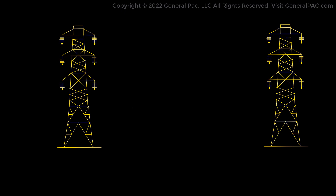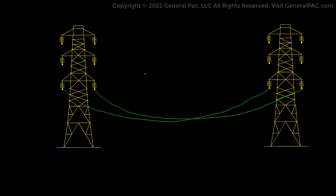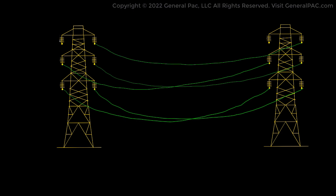Another important parameter to be familiar with is the sag of a transmission line. A conductor stretching tightly between its supports will have high tension or stress and might end up breaking. Therefore, to reduce this excessive tension, the lines are loosened up a bit and designed to have a dip or a sag. The height difference between the lowest point of the conductor and the point from where the conductor is attached is known as the sag.